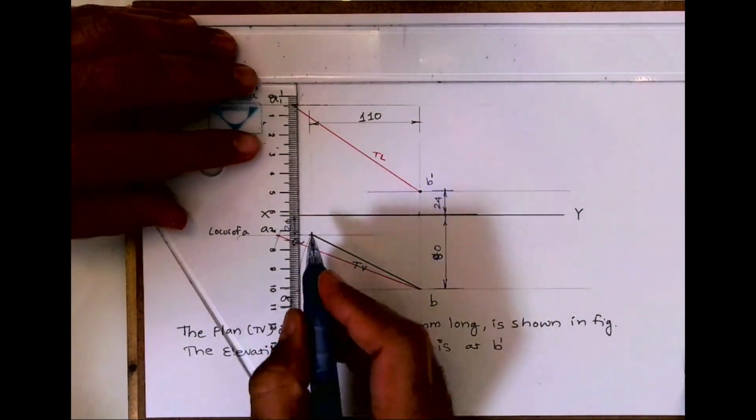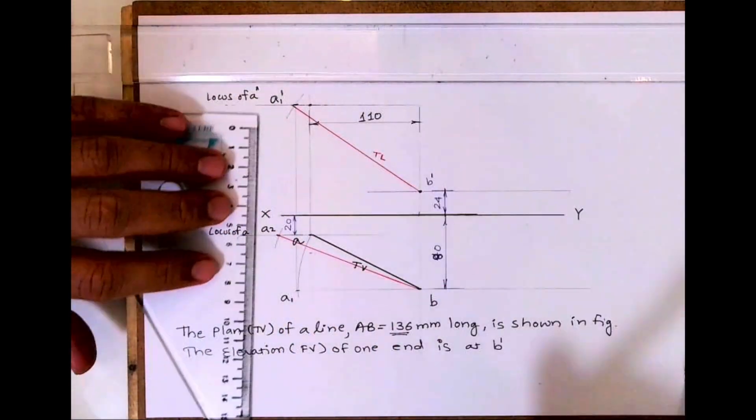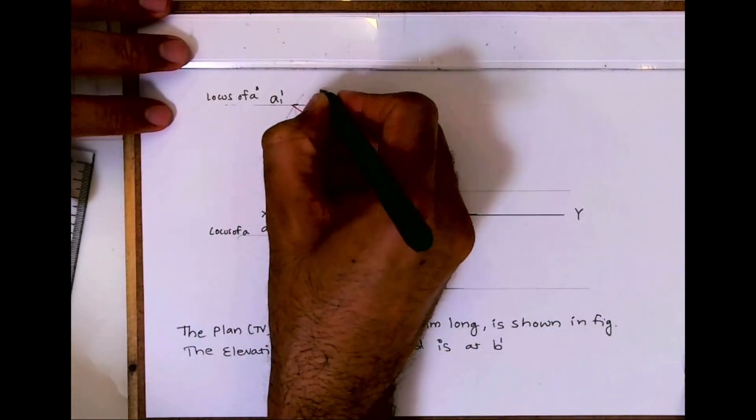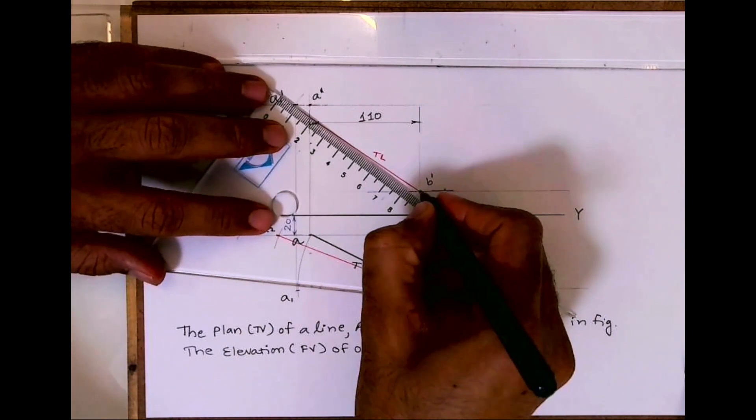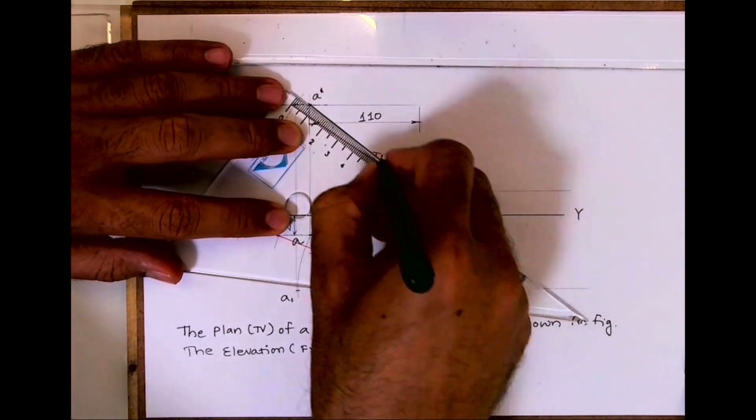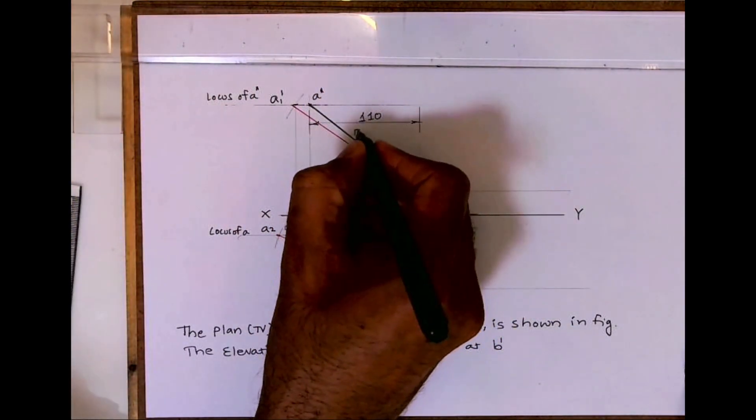Now DB is given, see. So from point A I will draw a vertical line. Wherever it will cut on that locus of A dash, that will be A dash. See this? So this is the front view, that is elevation.